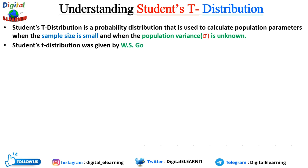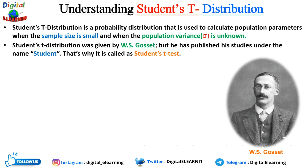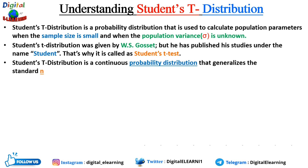The student t-distribution was given by W.S. Gossett, but he published his studies under the name 'Student,' which is why it is known as the student t-test. It is basically a family of distributions that look almost identical to the normal distribution curve. The only difference is it is a bit shorter and more flat.